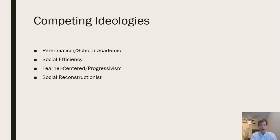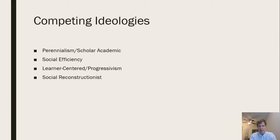We're going to look first at some competing ideologies — this is an introductory look, and we'll study them in much more detail as the course progresses. Perennialism, often referred to as scholar academic ideology, sometimes also called humanism. There's social efficiency ideology, sometimes called essentialism. There is learner-centered ideology, sometimes also called progressivism. And there is social reconstructionist ideology.